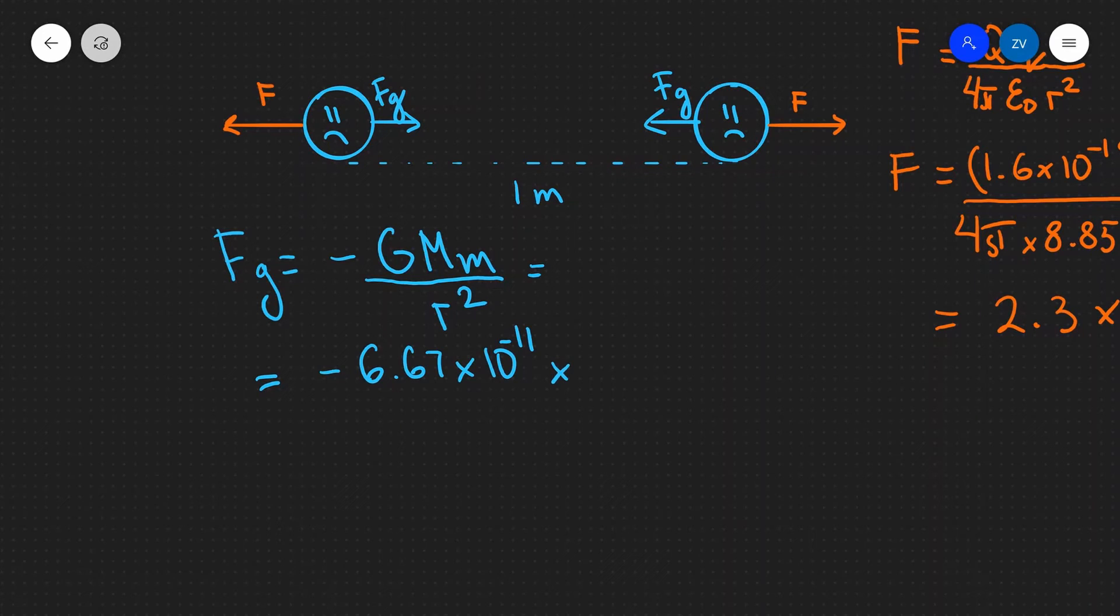Because both of the particles above are electrons, we're going to type in the mass of an electron, 9.11 times 10 to the power of minus 31 kilograms, and we're going to square that number. We're going to divide that by the distance squared, which in this case is just one meter, so that's just one.